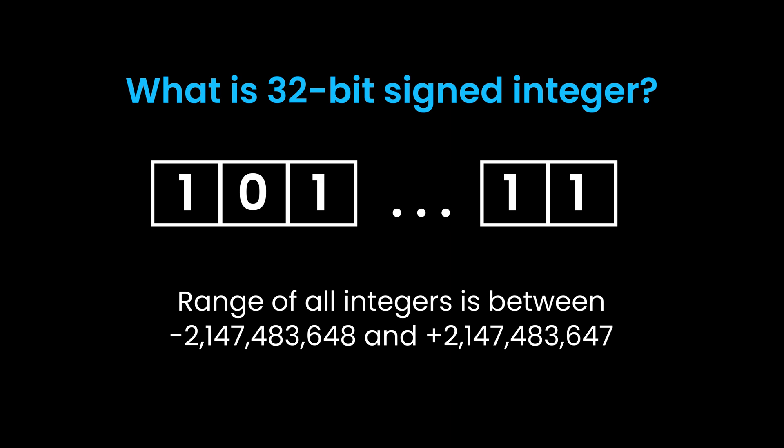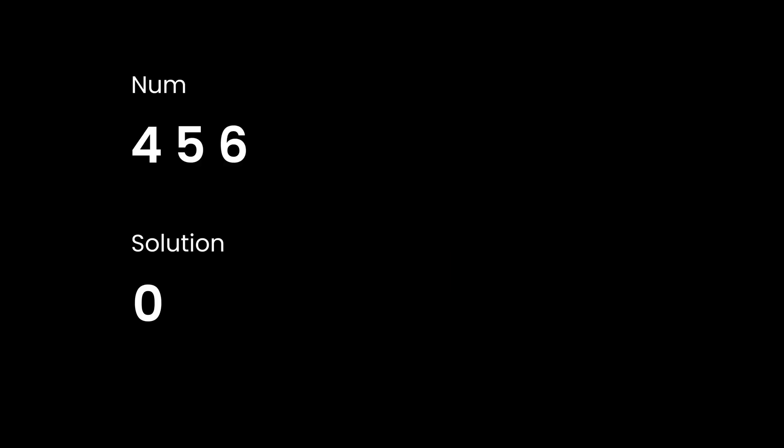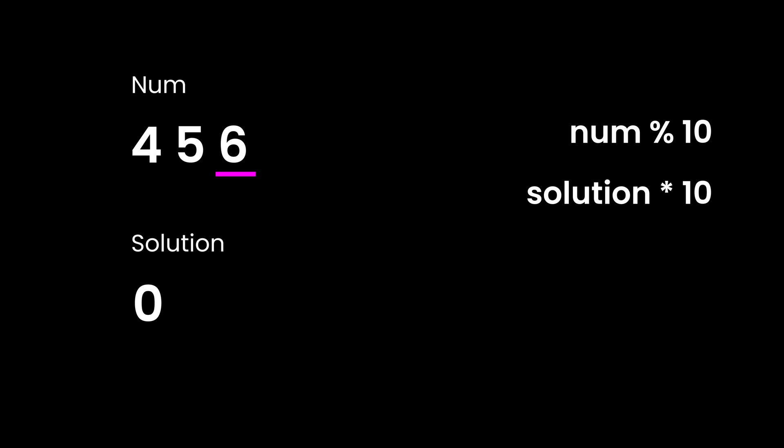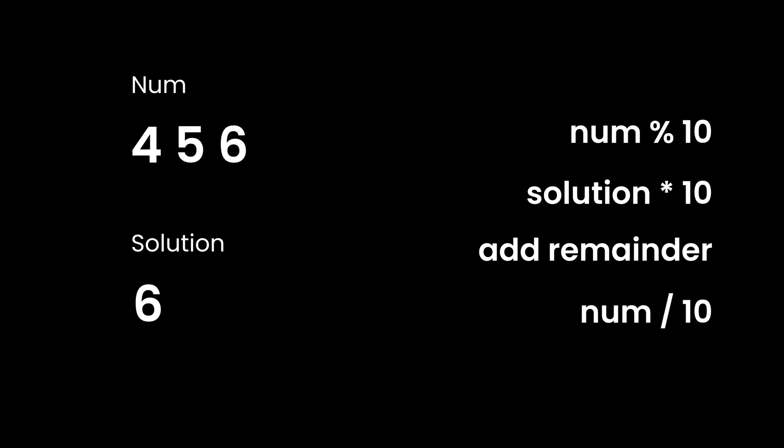So let's look at the approach to solve this problem. Given the number 456, we need to reverse it by taking one digit at a time. To get 6 by itself, we mod the number by 10, which gives a remainder of 6. Then we multiply our solution by 10 to make space for 6, add 6 into our solution, and then divide our number by 10 to remove the 6.